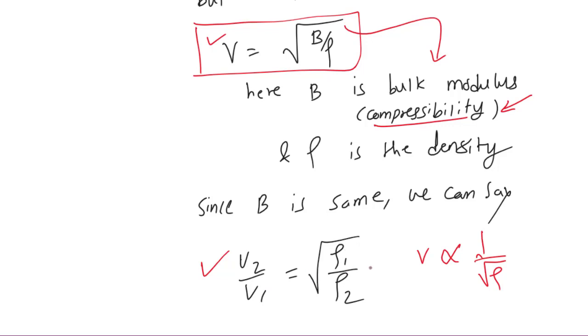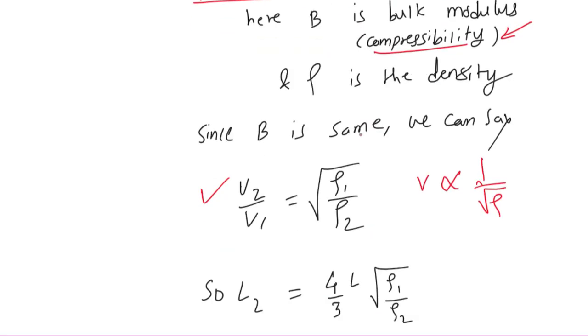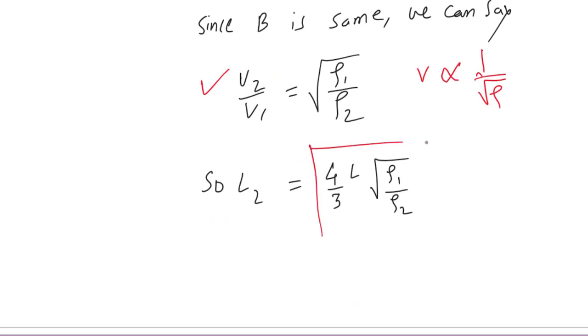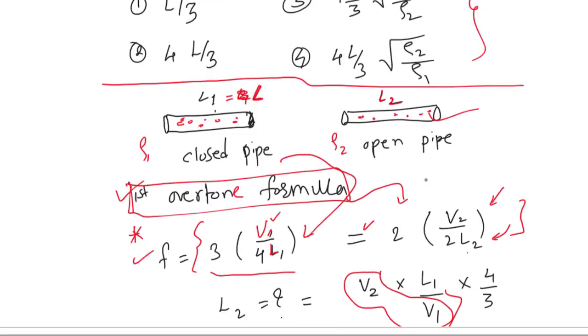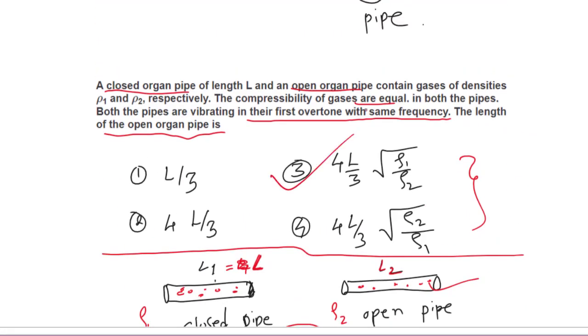So we can put this value in the above equation and then we will get L₂ as 4L divided by 3 under root of ρ₁ divided by ρ₂. So the correct option will be this one, third one. Thank you for watching.